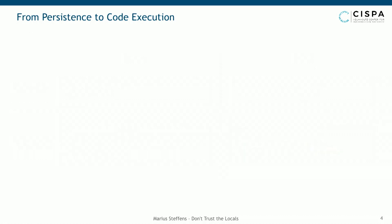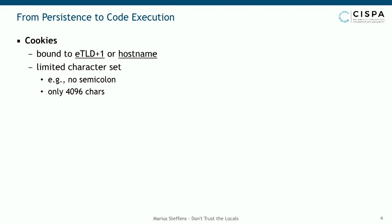What storage mechanisms exist on the client side, and what can an attacker abuse to get his code executed? The first thing which might come to mind are cookies. Cookies were meant as a way to augment HTTP with state — you can store session information on the client side, but also other information such as the language selection of your users.